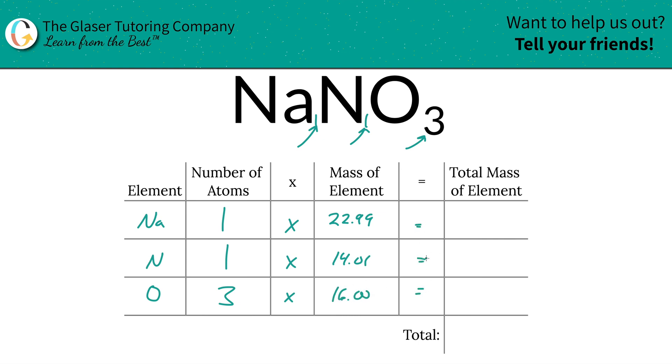And then we're simply going to multiply the row across to find the total mass of the element. So total mass of sodium here in the compound is 22.99, total mass of the nitrogen is 14.01, and then the total mass of the oxygen is 48.